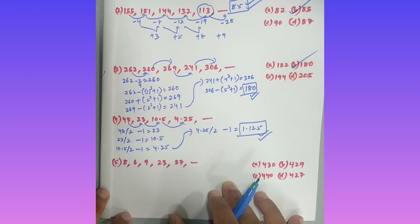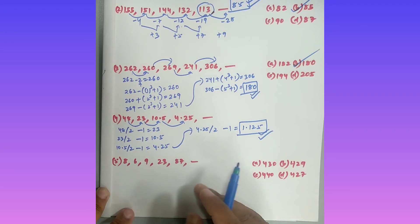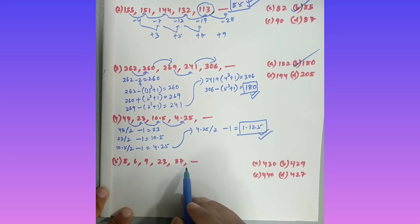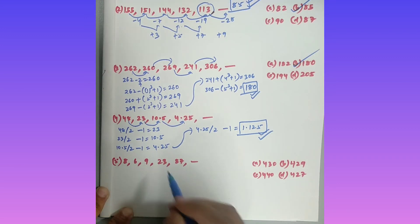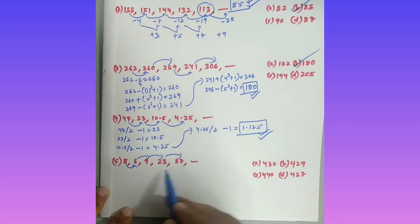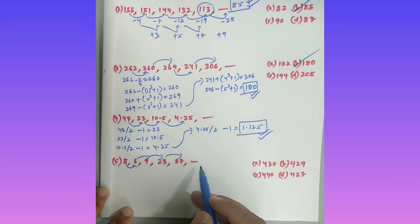Now question number 5 — a very interesting question. This is why I'm explaining how to solve number series in 5 seconds. The series is: 8, 6, 9, 23, 87, dash. What is the relationship between these numbers? 8 to 6 is decreasing, then increasing, increasing, increasing with a huge gap — so multiplication logic applies.